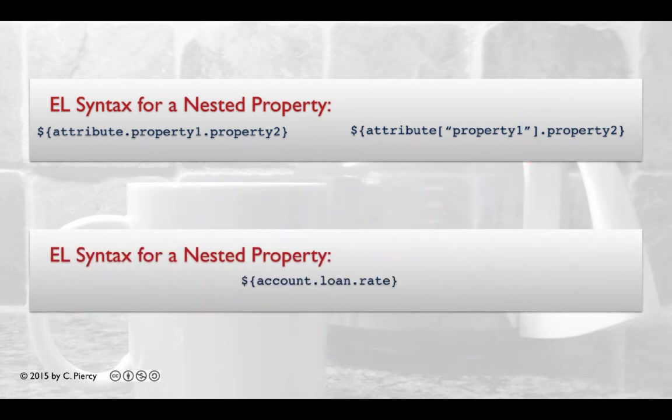And then with dot notation, we can access the property that is nested inside of the first property. For our account that holds a loan example, we might access the rate of the loan, which is stored in the account, like this. Alternatively, we can use the second notation.